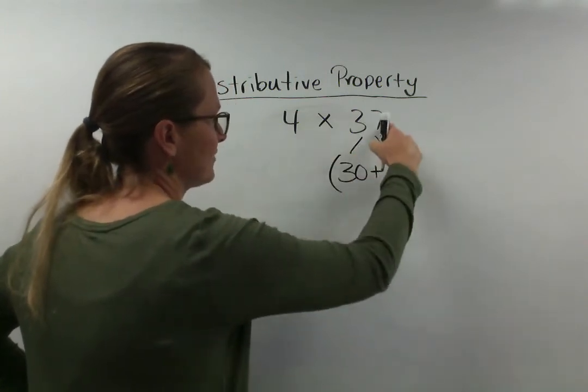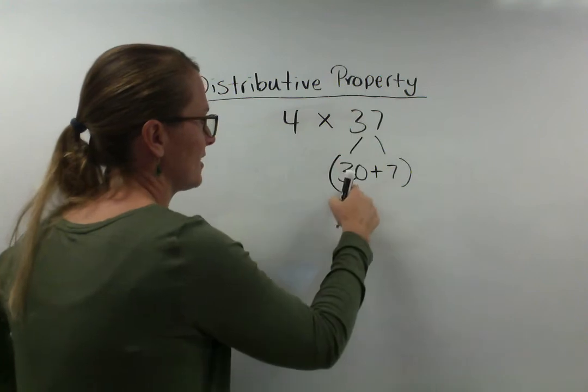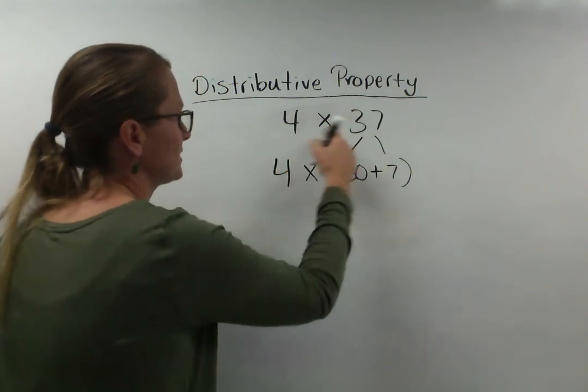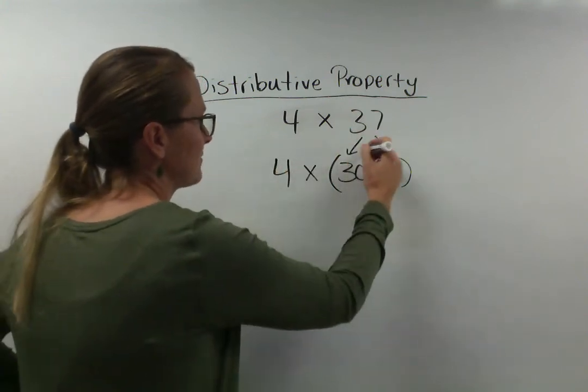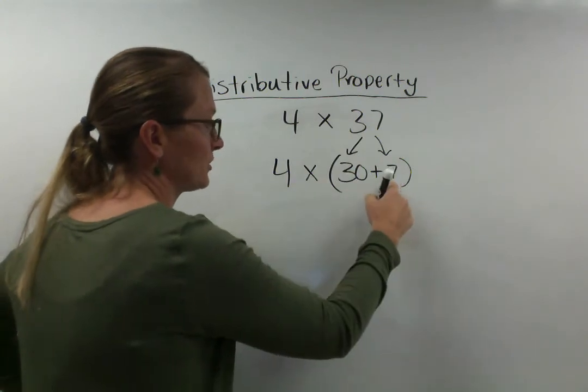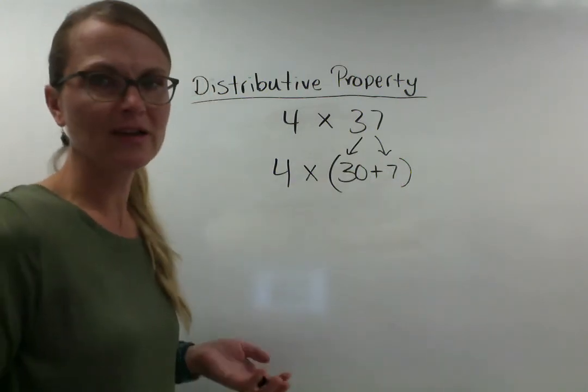Because 37 is 7 ones and 3 tens. So 4 times 37 is the same thing as 4 times (30 plus 7). 37.